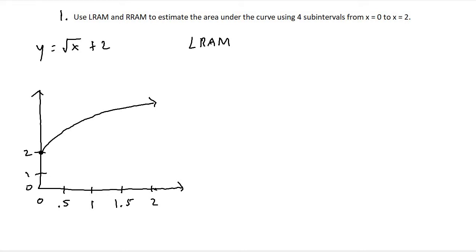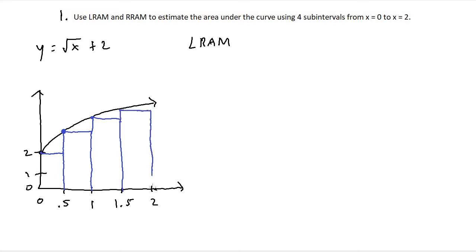Starting with LRAM, we begin from the leftmost endpoint at x equals zero. We go from zero to 0.5, up to the curve, across, and back down at the next x value. We repeat this process — up, right, down — for each subsequent interval, creating four rectangles of equal base length 0.5 that span from x equals zero to x equals two.